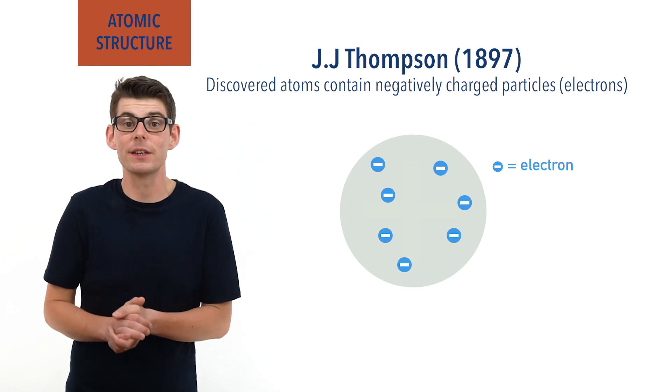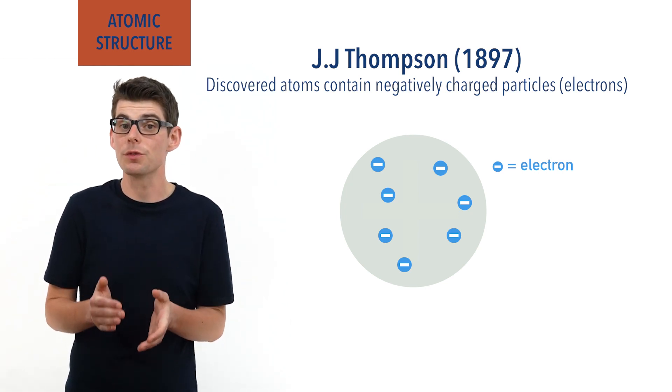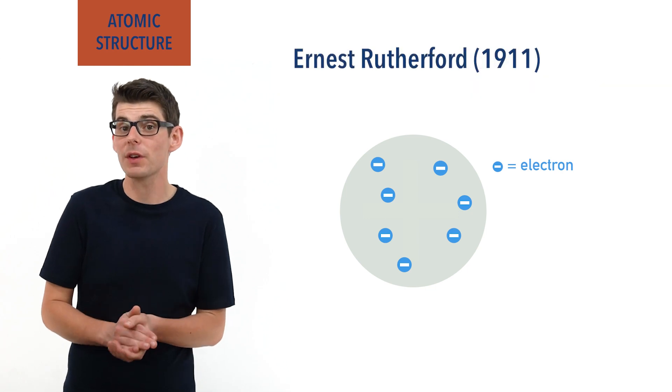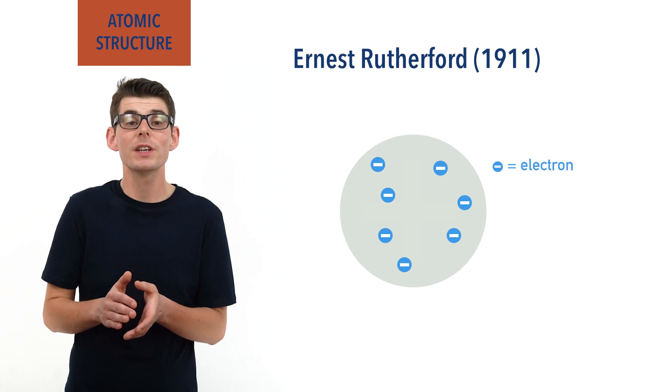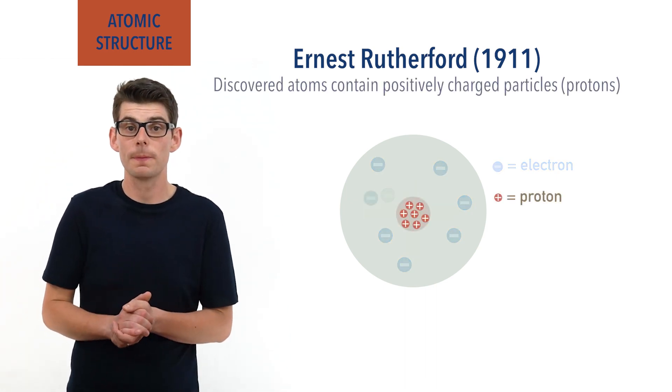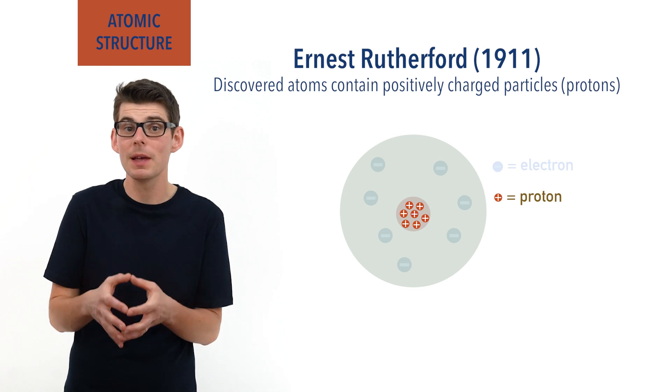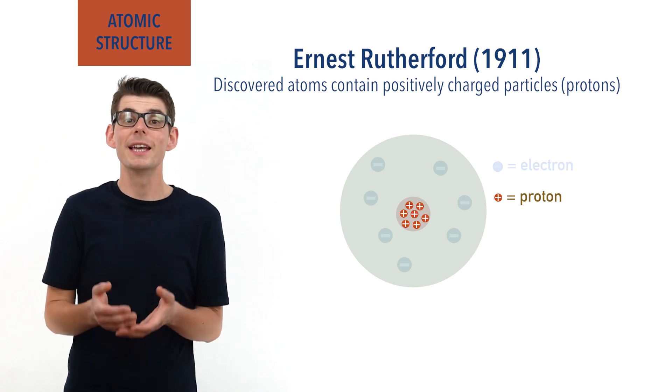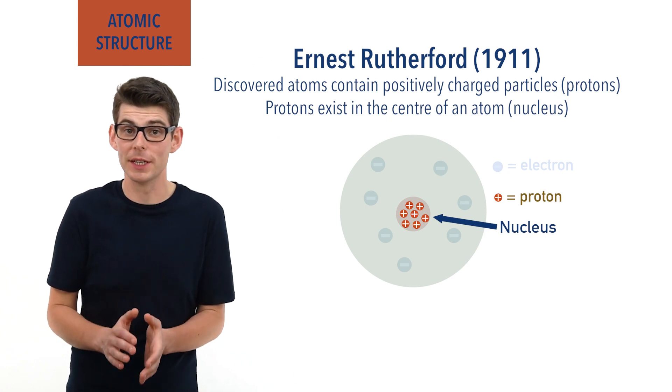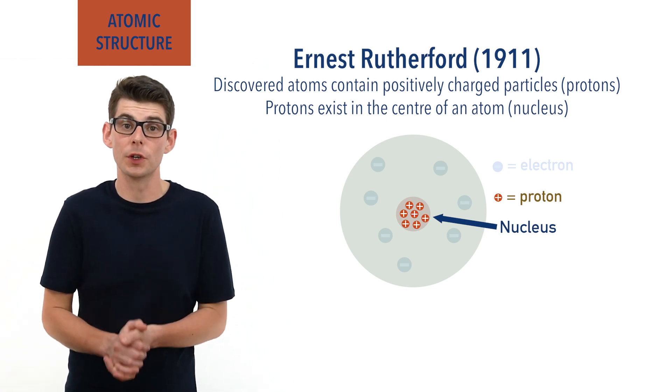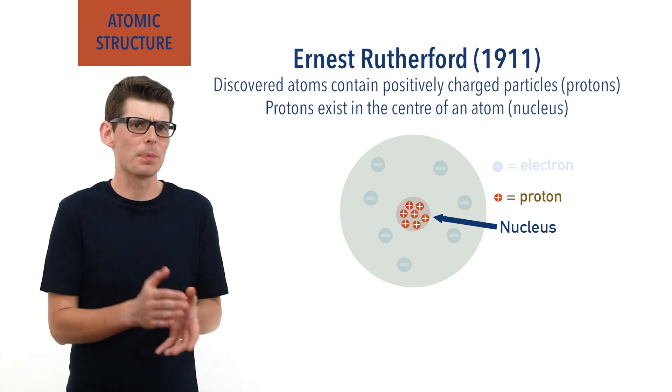In the early 20th century, one of JJ Thompson's past students called Ernest Rutherford went on to discover that atoms also contained positively charged particles that he called protons. These protons were found to be in the very center of an atom, making up what was called a nucleus. Interestingly, he also noted that the charge of a single proton was exactly the same as the charge of an electron, just the opposite way around.